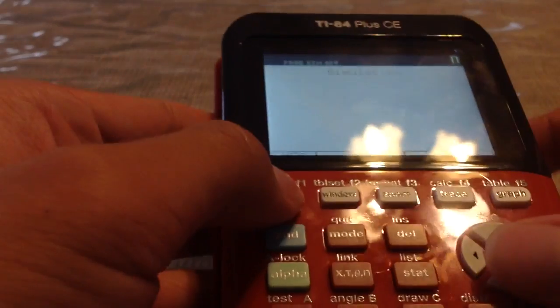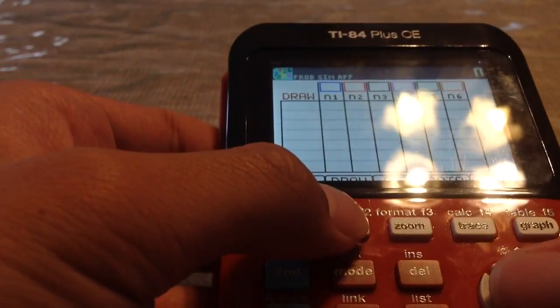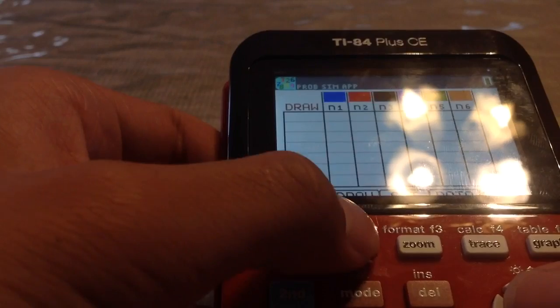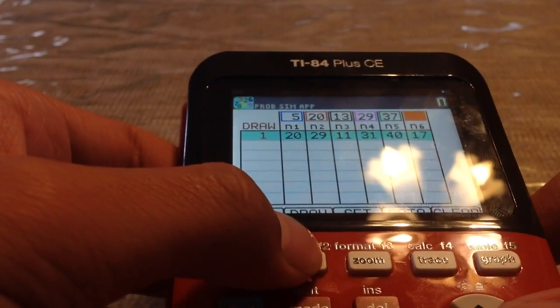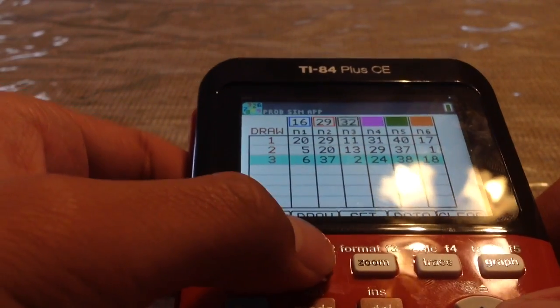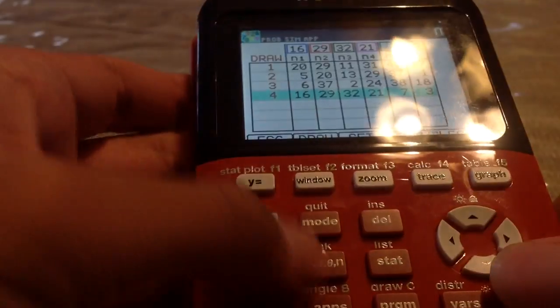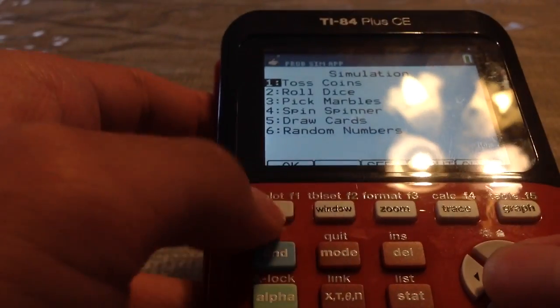I'm going to do it right this time, okay, did it. This is the last one that I haven't checked out, random numbers. Okay, that's that. You can find out a way to use it, I don't really have a way.